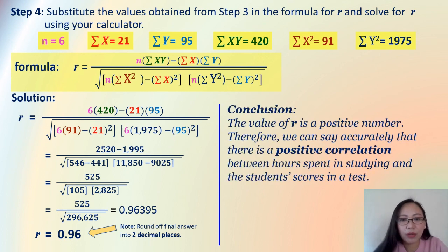So, for our conclusion, the value of R here is positive. Therefore, we can say accurately that there is a positive correlation between hours spent in studying and the student's score in a test. In other words, as the number of hours spent in studying increases, the student's score also increases. That one is a positive correlation.